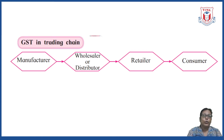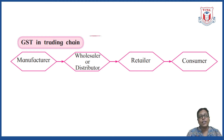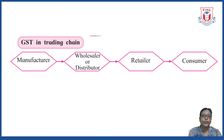Now let us see the next concept: GST in the trading chain. When we go to a shopkeeper to purchase something, that shopkeeper has not manufactured it. He has ordered it from a retailer, who ordered from a wholesaler or distributor, and the wholesaler gets the goods from the manufacturer. So the trading chain is always established.